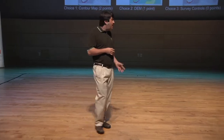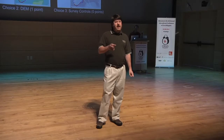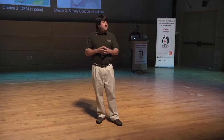For example, a Category 5 hurricane approaching a coastal city, much like Hurricane Sandy in 2012. As you can see here, the game player is being prompted with three choices as to which type of ground elevation representation they should include in their map to make a decision about potential storm surge. A contour map would be a better ground elevation representation choice than either a digital elevation model or survey control points. Based on the choice made by the game player, a score is generated that can be used to measure the game player's spatial thinking ability.